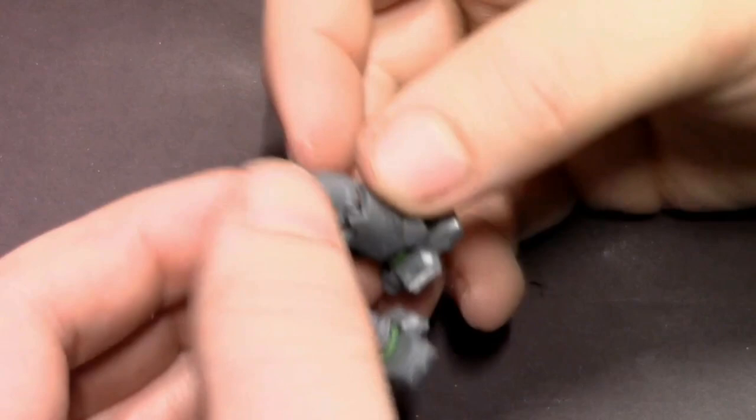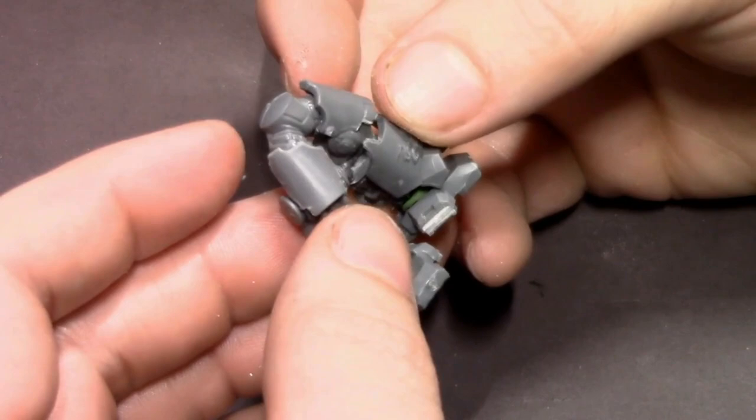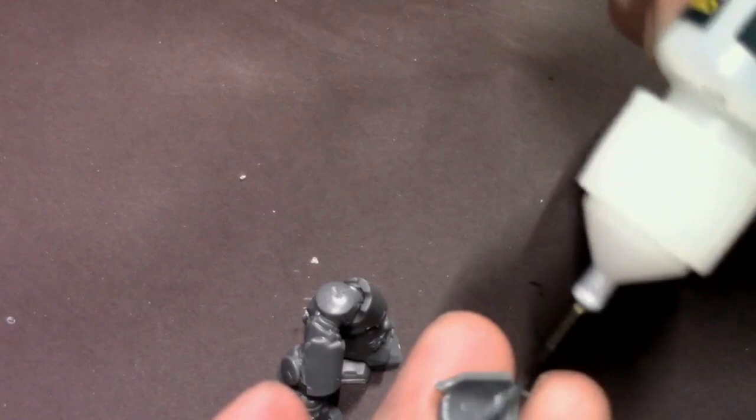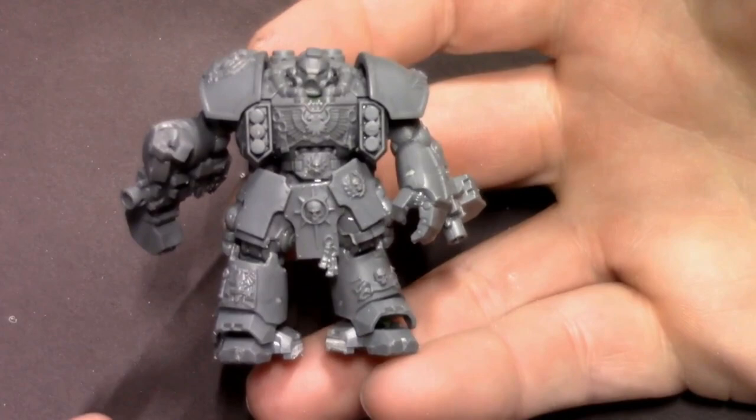I think overall in terms of height we've extended the Centurion's height by about five to six millimeters, which is actually pretty big in terms of 28 millimeter scale models. If a basic old style space marine is 28 millimeters tall or about 28 millimeters to the eye line, extending it that much makes a huge difference.